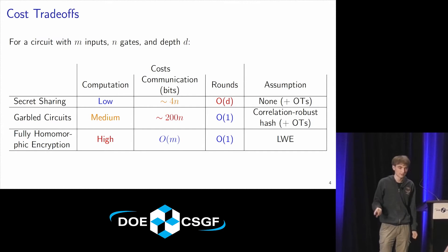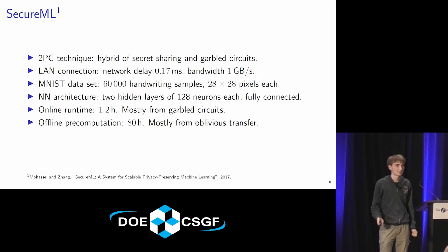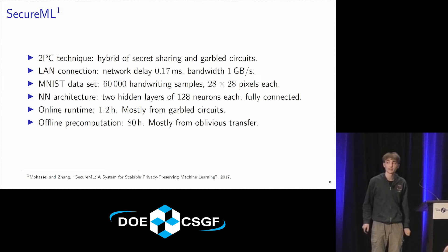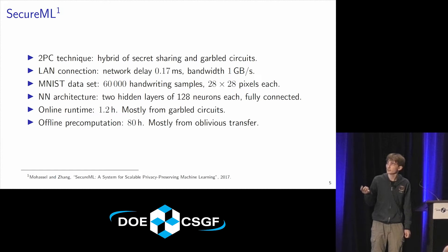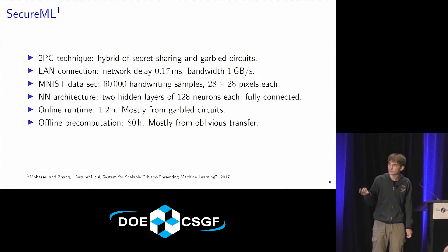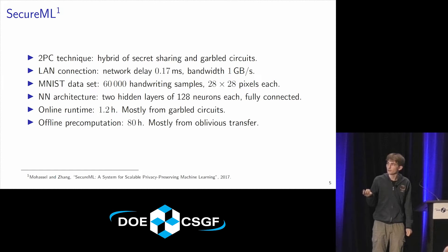I'm focusing on garbled circuits as a nice intermediate between secret sharing and FHE. To illustrate applications: the SecureML paper implemented two-party computation for a neural network, training on the MNIST dataset inside two-party computation. They used a hybrid of secret sharing and garbled circuits, with two servers in the same data center for very fast communication. Even so, it still took 1.2 hours to train — just the online time — mostly due to evaluating the ReLU function inside garbled circuits. The offline pre-computation was 80 hours, mostly oblivious transfers. These things can get quite costly.